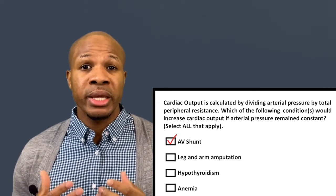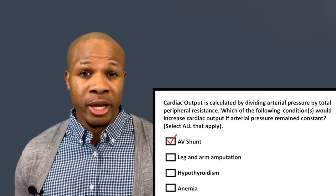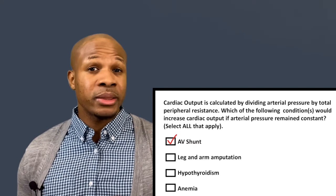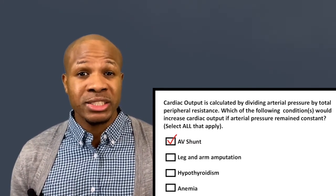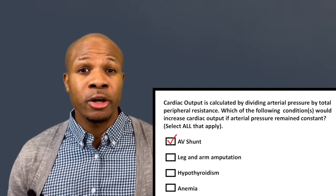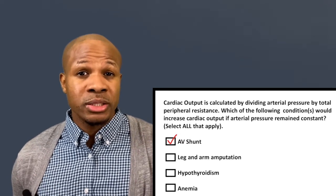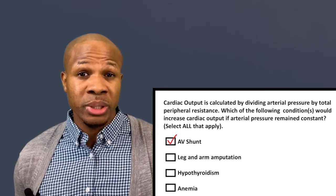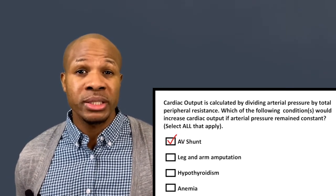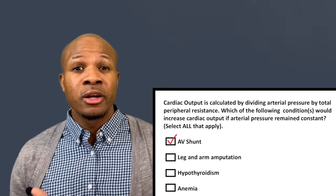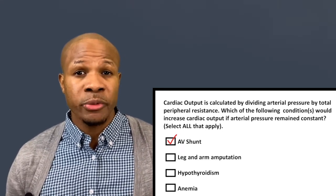Because there's less resistance, an AV shunt will cause cardiac output to increase — so this is a correct answer. That said, it's not necessarily a good thing, because you're transferring oxygenated blood from the arteries into the veins, which contain deoxygenated blood.